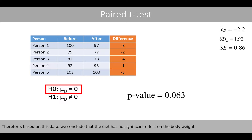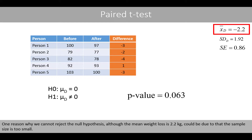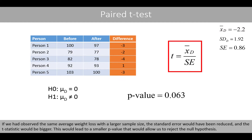Therefore, based on this data, we conclude that the diet has no significant effect on the body weight. One reason why we cannot reject the null hypothesis, although the mean weight loss is 2.2 kilos, could be that the sample size is too small. If we had observed the same average weight loss with a larger sample size, the standard error would have been reduced and the t-statistic would have been bigger, leading to a smaller p-value that would allow us to reject the null hypothesis.